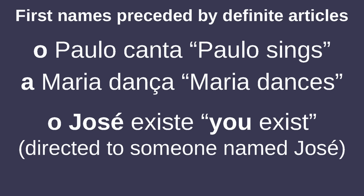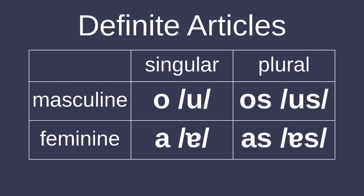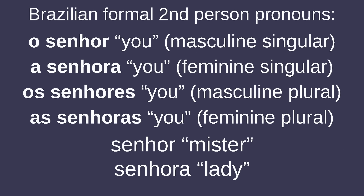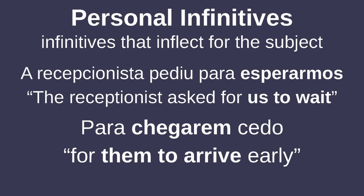In Portuguese, first names are preceded by definite articles, and in some varieties, doing this with the name of the person you're talking to can mean 'you.' While definite articles in Romance languages typically start with L, they start with vowels in Portuguese. Brazilian Portuguese is losing the second-person informal pronoun 'tú' and its corresponding verb conjugations, being replaced with 'você,' and the second-person plural 'vós' is also old-fashioned, being replaced by 'vocês.' 'O senhor,' 'a senhora,' 'os senhores,' and 'as senhoras' are being used as formal second-person pronouns instead. There are also personal infinitives, where pronouns are used before the infinitive instead of the verb being conjugated.